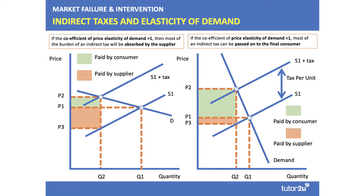Contrast that on the right-hand side with a demand curve which is more price inelastic, and you can see here the burden of the tax shifts mainly to the consumer. The producer is able to pass on most of the tax to the consumer. So it's quite important to know the relationship between the elasticity of demand and the tax burden.